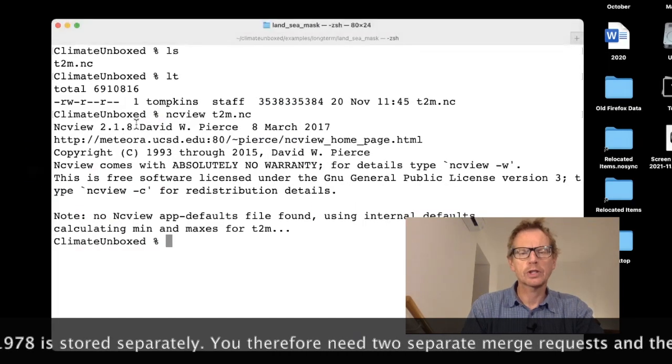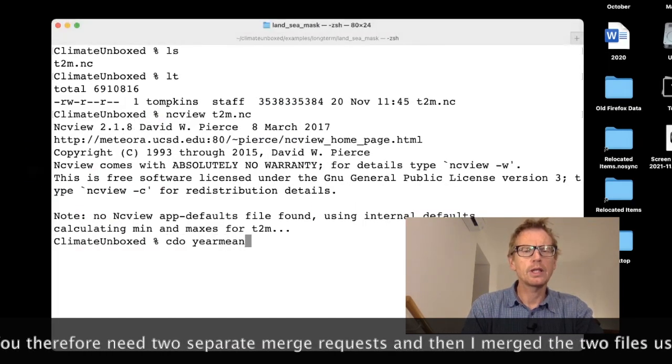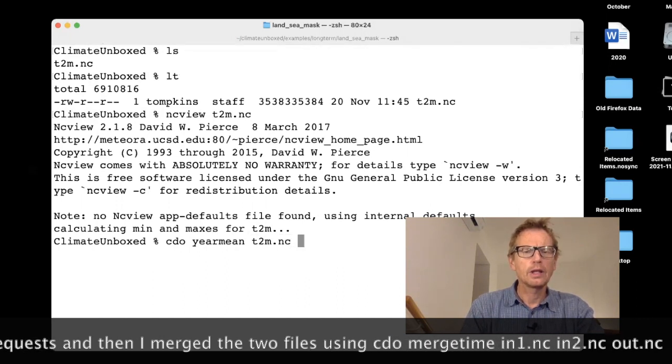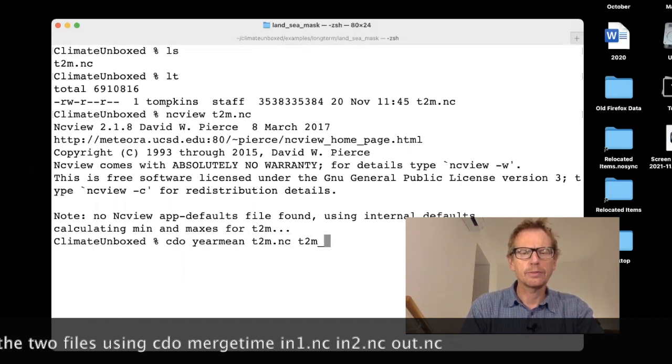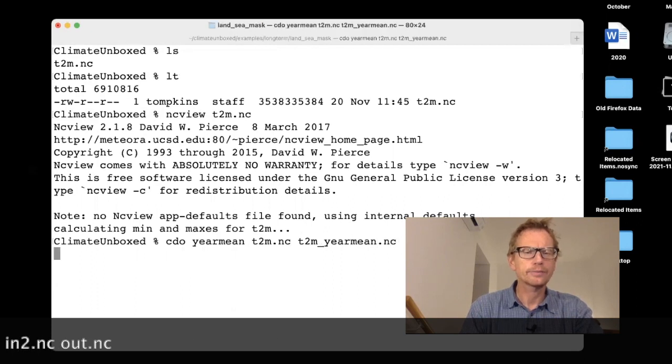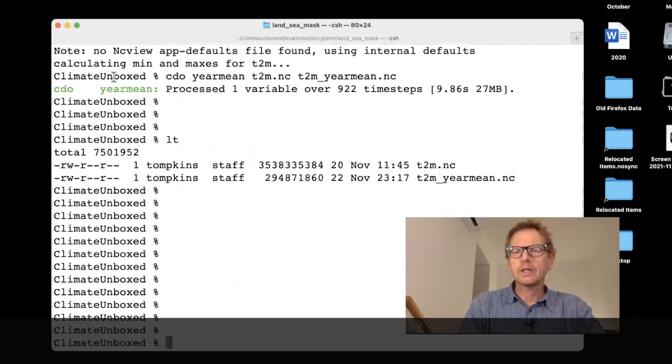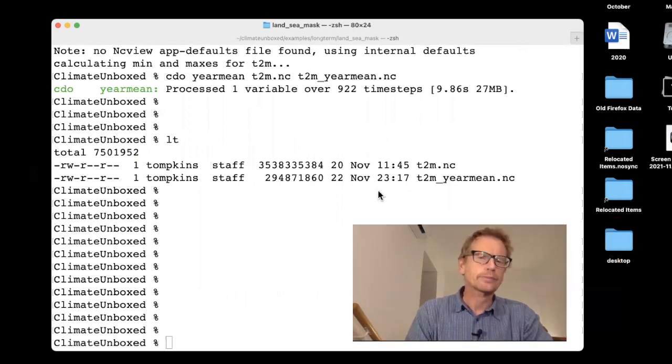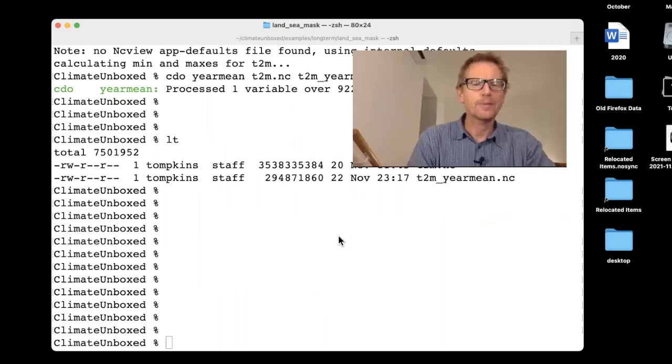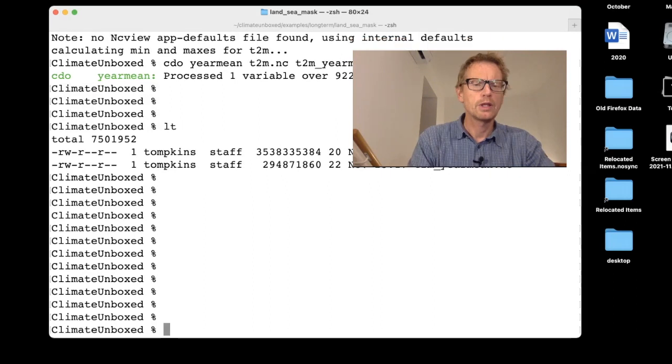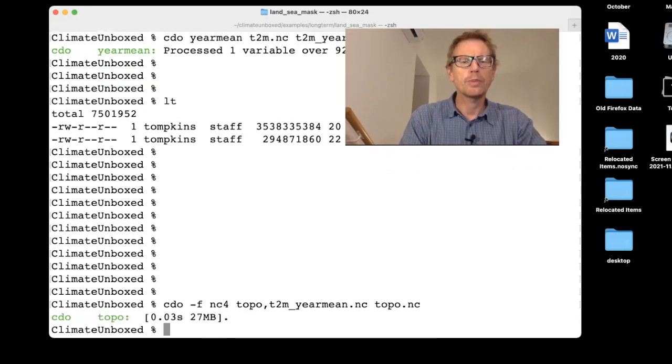Now this is actually the data from 1950 to 1978 merged with the data from 1979 to 2020. This is a monthly file. I'm going to average this using yearmean. And then the output is going to be yearmean.nc. So now we have in this directory, we have the T2M and we have T2M underscore ymean. I'm going to move myself up here. First of all, make a topographical file.